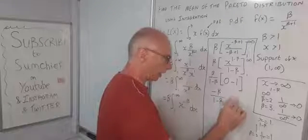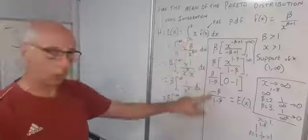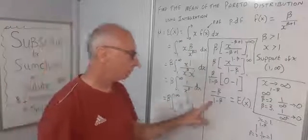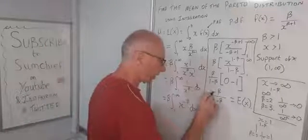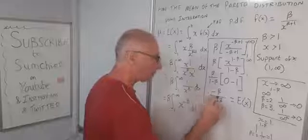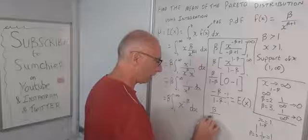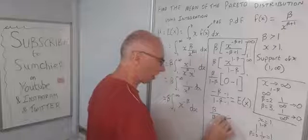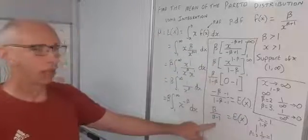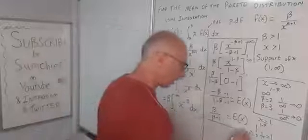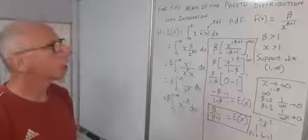This is our expected value of x, but we can make it look neater. Multiplying the numerator and denominator by minus 1 gives β over β minus 1. So the mean of the Pareto distribution is β over β minus 1. That is our final solution.